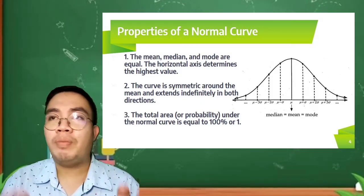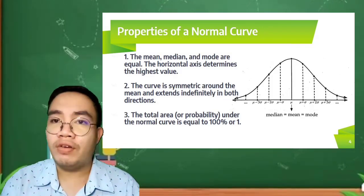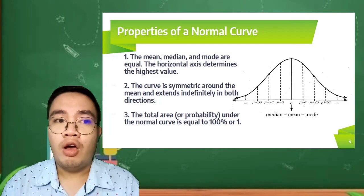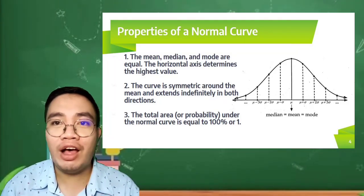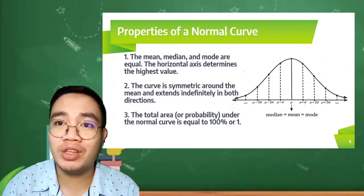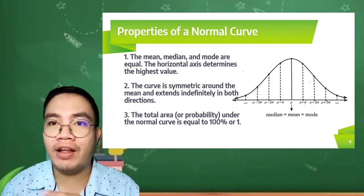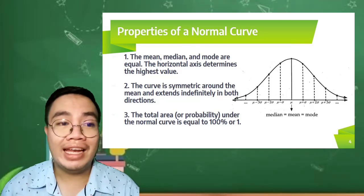Of course, the total area or probability under the normal curve is equal to 100% or 1. Again, the values going to the right of our mean are the values which are positive and the values going to the left are the values which are negative.